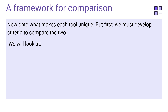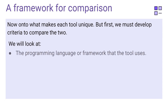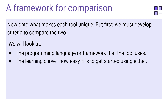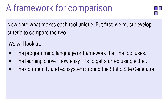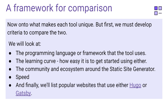Now, onto what makes each tool unique. We must develop criteria to compare them. We'll look at the programming language or framework that the tool uses, the learning curve and how easy it is to get started, the community and ecosystem around the static site generator, speed, and finally, we'll list popular websites that use either Hugo or Gatsby.